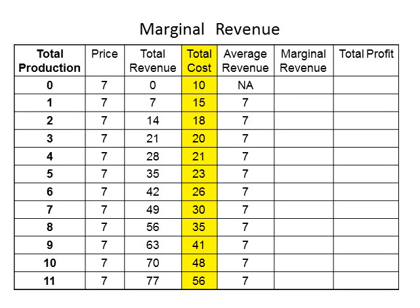The next column represents total cost — the amount of money spent on producing the good. The fifth column is the average revenue from the sale of the firm's product; another video showed that average revenue is equivalent to price. The sixth column is the marginal revenue column, which is the amount of additional revenue earned by the firm for each additional unit of output — you will learn how to calculate it in this video. The final column is total profit, which will be calculated in another video.